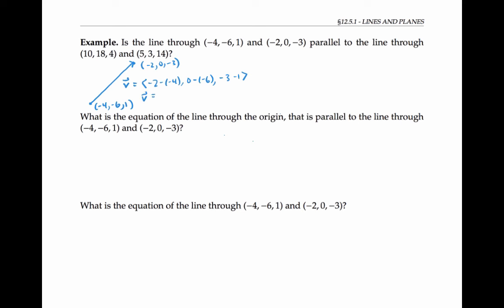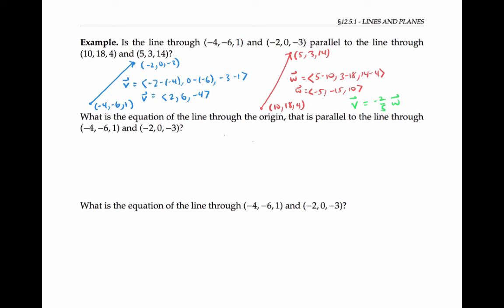That is the vector with components 2, 6, negative 4. Similarly, the line between the other pair of points goes in a direction parallel to this vector that I get by subtracting coordinates. So my two lines will be parallel if and only if my two vectors are parallel — in other words, if and only if V is a scalar multiple of W. In fact, it's easy to check that V is negative two fifths times W, and so the two lines are indeed parallel.